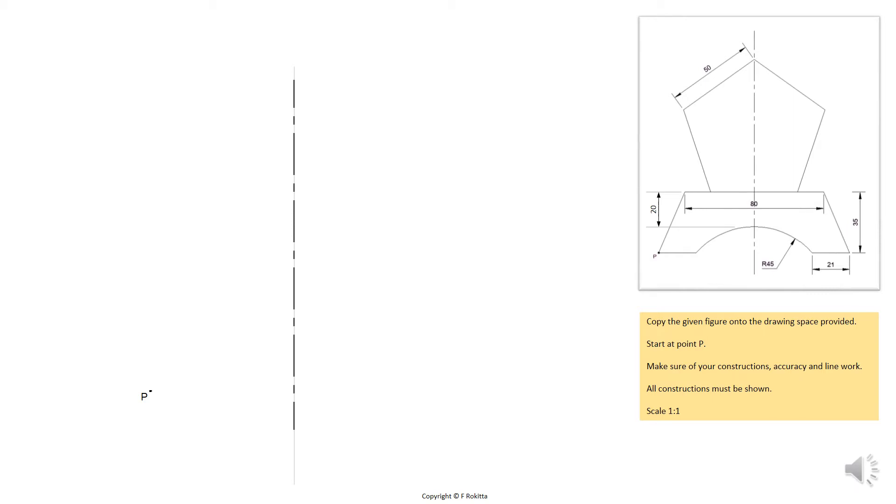Start this drawing by placing your ruler perfectly horizontal and aligned with point P. Draw a light construction line that stretches all the way from point P to the other side of the centre line as indicated here.